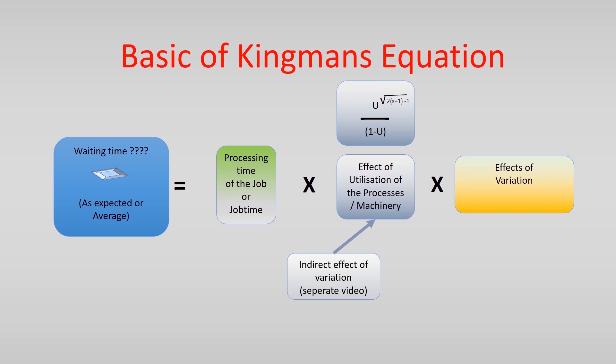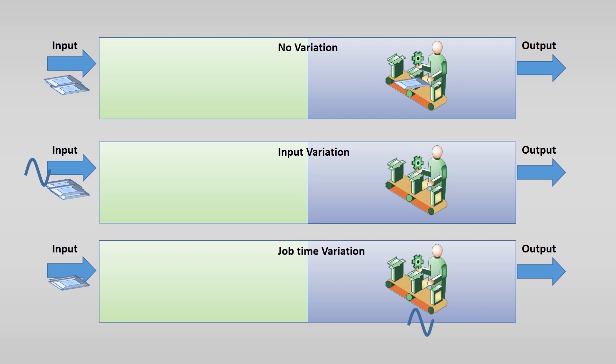In this video we state direct effects of variation on the waiting time. We use the same basics but now we focus on the direct effect of variation in arrival times and variation in job times on the waiting time. Let's go back to the effects of variation.